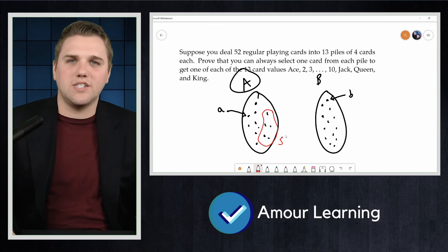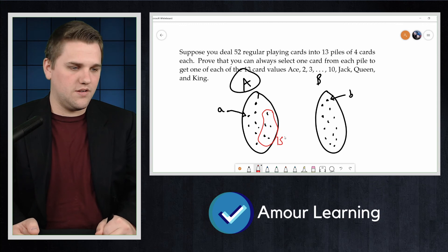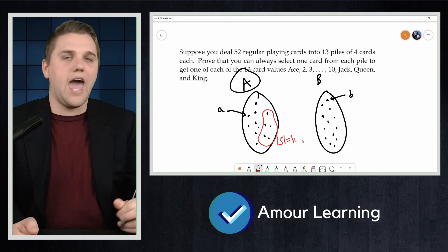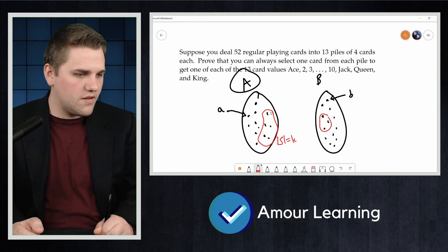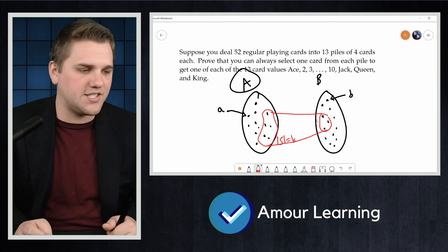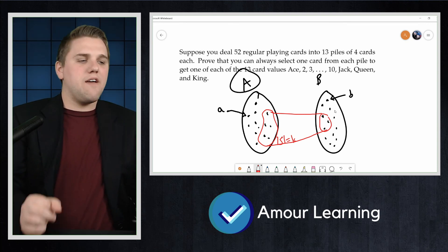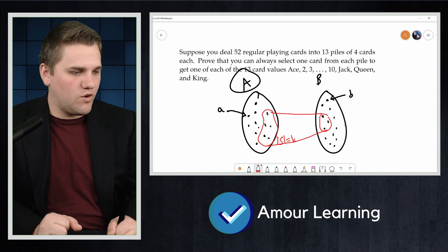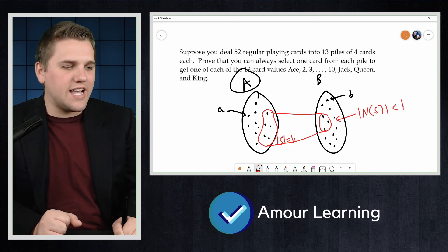But what if it wasn't? Say the size of S was K. If the neighborhood of S—if all the edges coming out of that subset S goes into this subset, the neighborhood of S—if the size of that set is less than K...